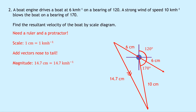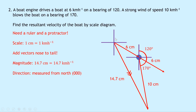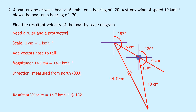We now need to find the direction. To do that, we're going to measure a bearing from north, which is 000, at the starting point of our nose-to-tail vectors. We can measure the angle from north at 000 going clockwise to the resultant vector. If you measure that with your protractor, you should get an angle of 152 degrees — and that is your bearing. Writing down our final answer: the resultant velocity is equal to 14.7 kilometres per hour at a bearing of 152.